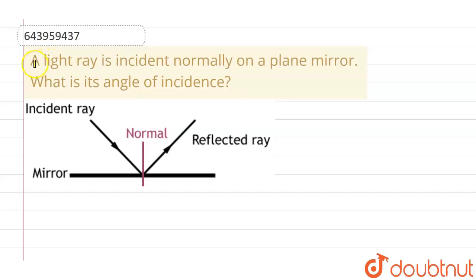Hello everyone, if we talk about this question, this given question is, a light ray is incident normally on a plane mirror. What is its angle of incidence?